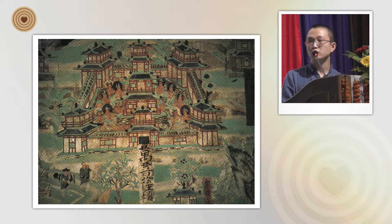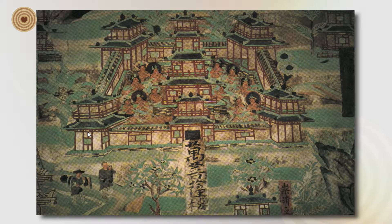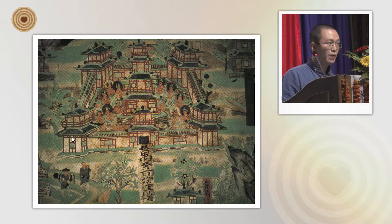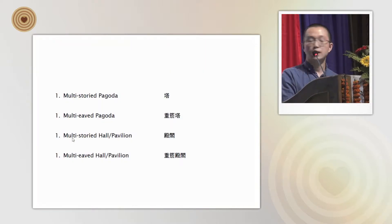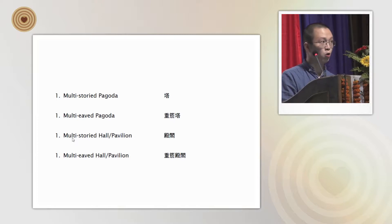We can see from 8th century mural paintings from northern China that the temple at that time is faithfully depicted with many kinds of tall buildings surrounding the temples, which dominated the landscape of Buddhist architecture at that time. We have roughly divided these tall buildings into four types: multi-storied pagoda, multi-eaved pagoda, multi-storied hall pavilion, and multi-eaved hall pavilion.